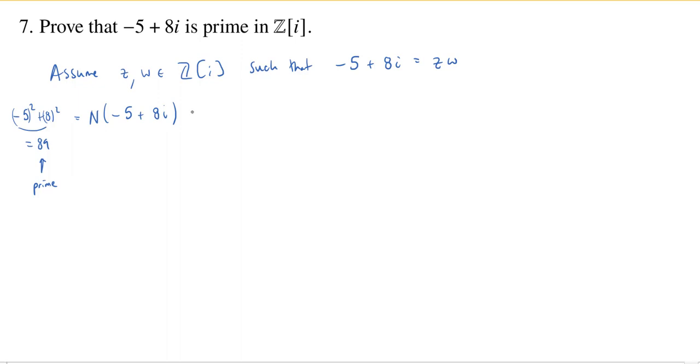Why is that? Well, we know that the norm of negative five plus eight i is also going to be the norm of z times w. But now we use the important product of norms theorem, which says that this norm map is multiplicative, meaning I can break this up as the norm of z times the norm of w.